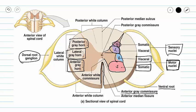This is going to be important in our discussion of pathways. If we're talking about an ascending pathway, we are going to bring information in through the dorsal root into our posterior gray horn. If we're talking about descending pathways, we're going to start in our motor nuclei — either our visceral or somatic motor nuclei — and that information is going to travel out over our ventral root.